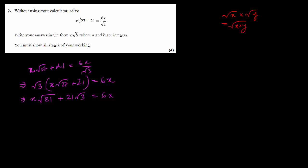√81 = 9, so the left side gives 9x + 21√3, and the right side is 6x. Bringing 6x to the left gives 3x, and bringing 21√3 to the right gives −21√3. So 3x = −21√3, and therefore x = −7√3.